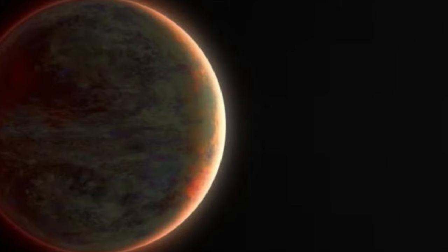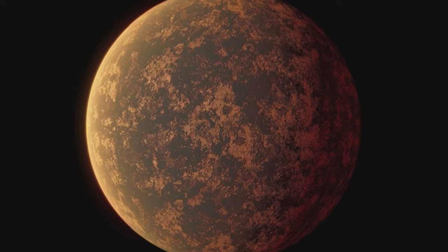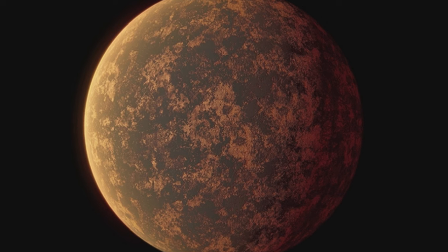The exoplanet in question is one of the most famous and well-studied we've seen to date. It's called WASP-121b, first discovered in 2015, a gas giant about 1.18 times the mass and 1.81 times the size of Jupiter, on a close orbit of its star of just 1.27 days.